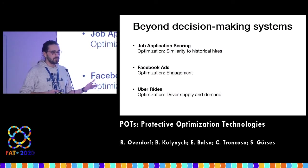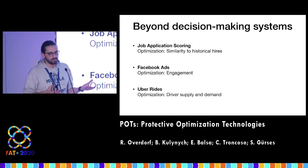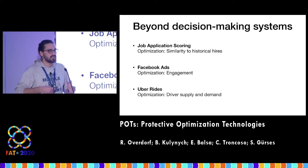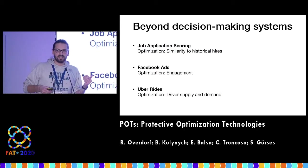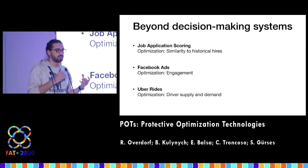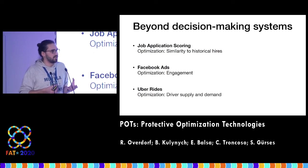Let's say automated job application scoring. It's a classical decision-making system, but you can also look at it as an optimization system. Indeed, there's some scoring model that could, for example, maximize similarity of new applicants to historical hires. Another example could be Facebook ads — Facebook uses information about user behavior to match ads to users in such a way that it maximizes users' engagement and Facebook's profit. One example that I don't think is very commonly considered a decision-making system could be Uber ride matching, where Uber matches drivers to riders and sometimes sets prices dynamically in such a way that it optimizes supply and demand.